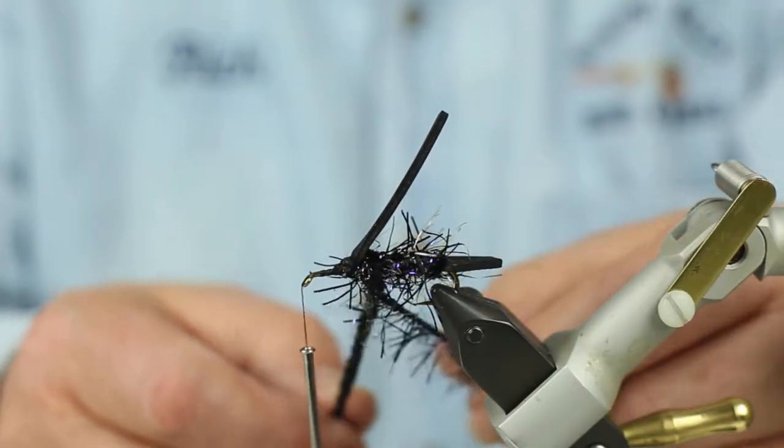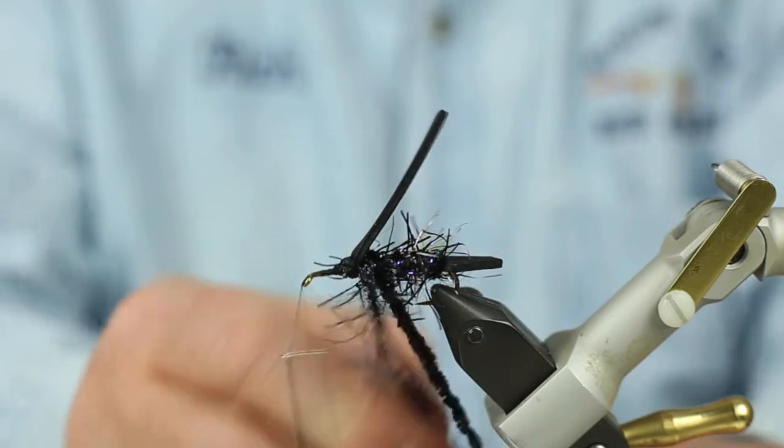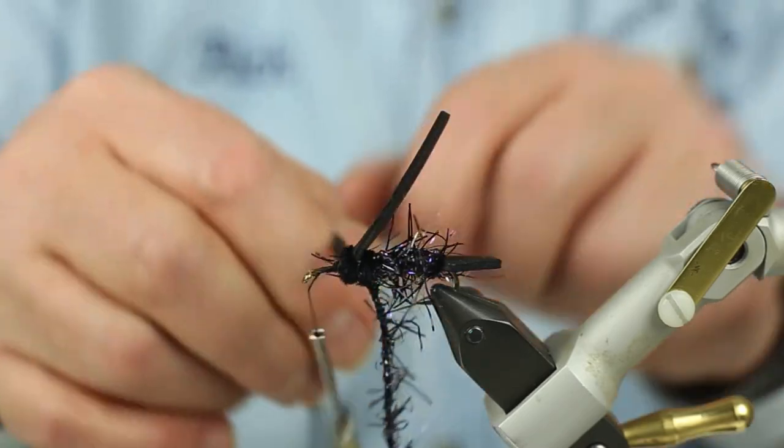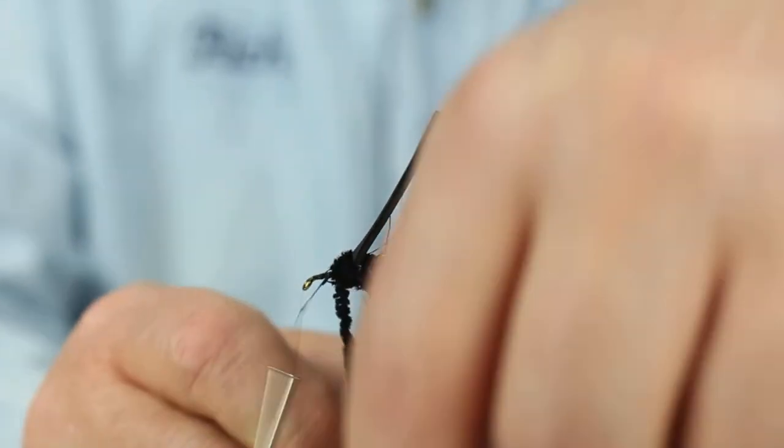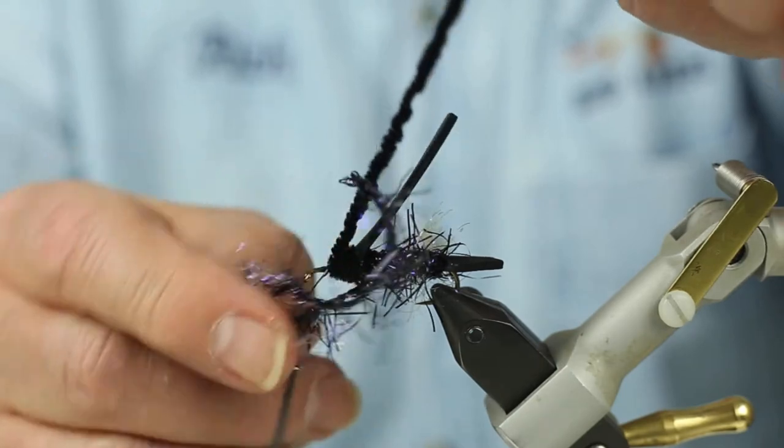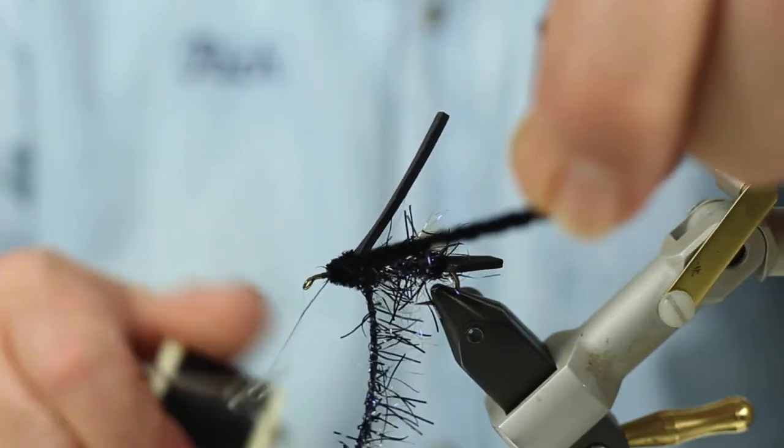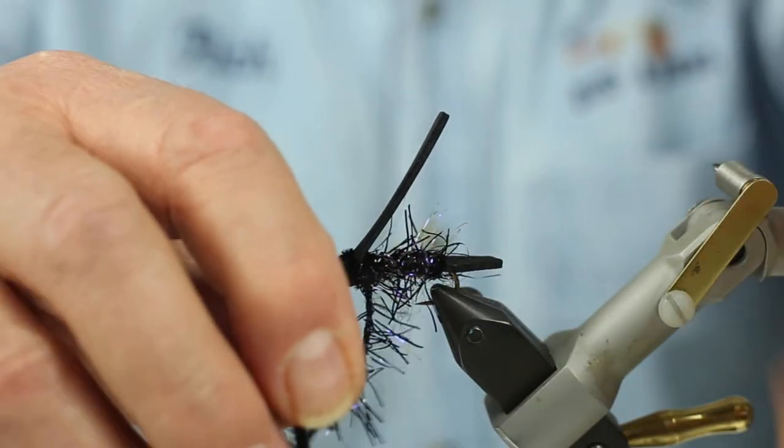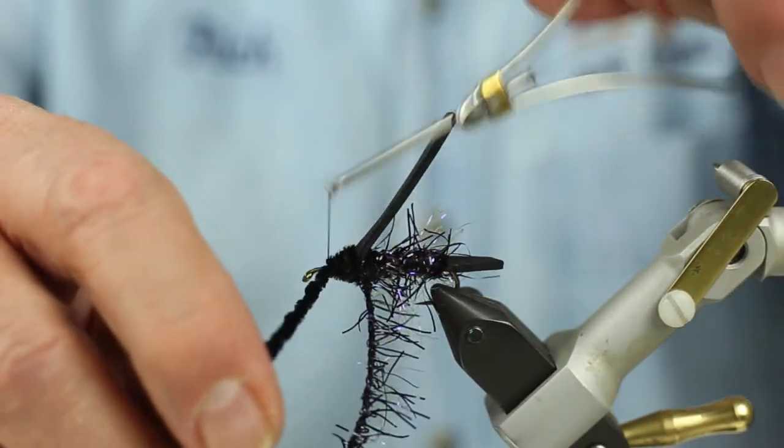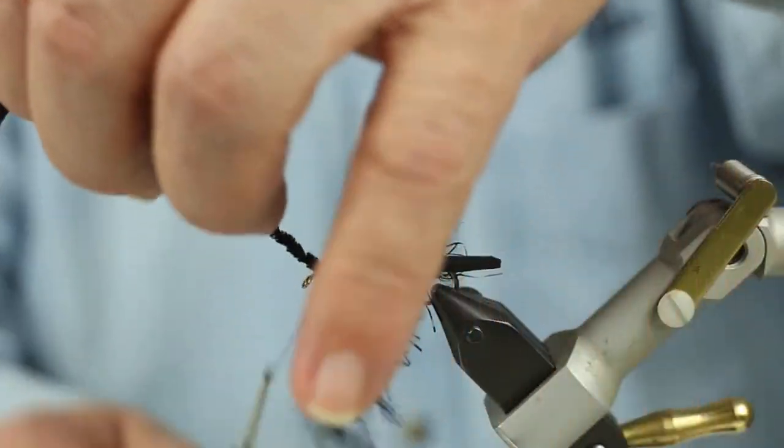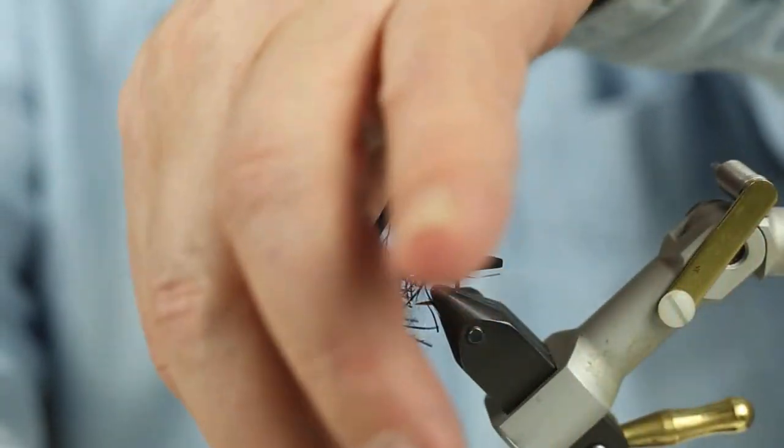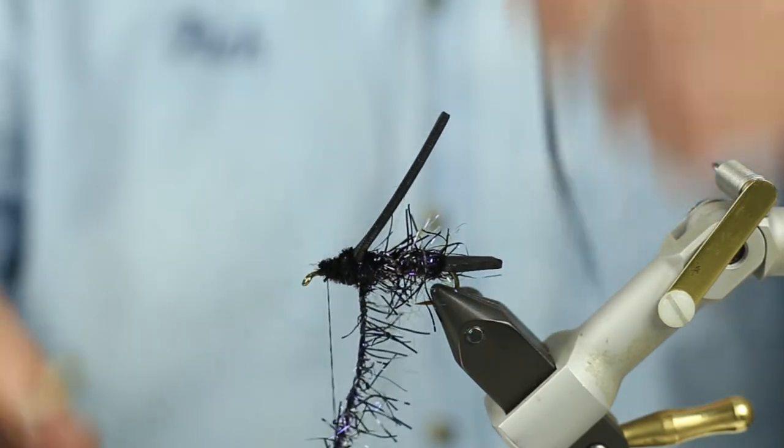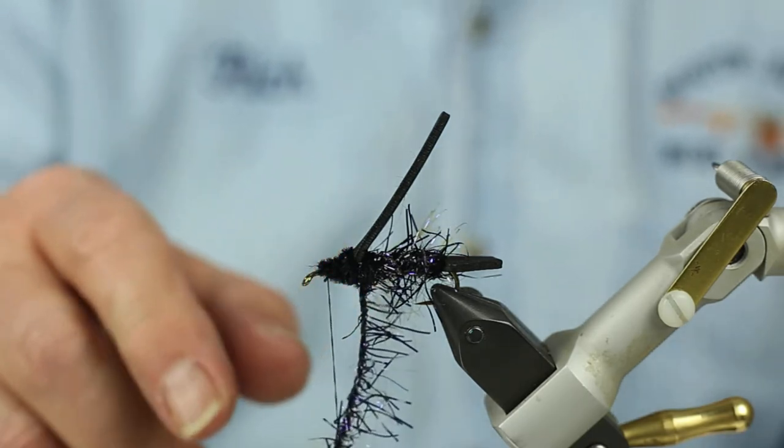Now, I'm going to go back and get first the black chenille. And make about three turns and get it up toward the eye, but not all the way onto the eye. And I'm going to lock it off again. Now, I can cut this excess off. Notice I have not gone all the way to the eye.